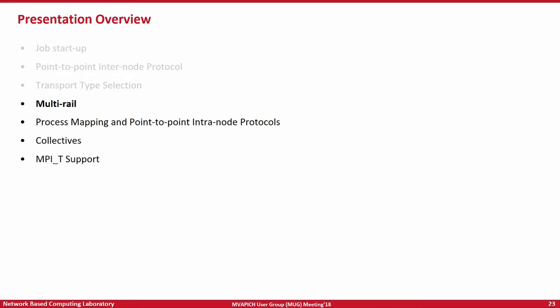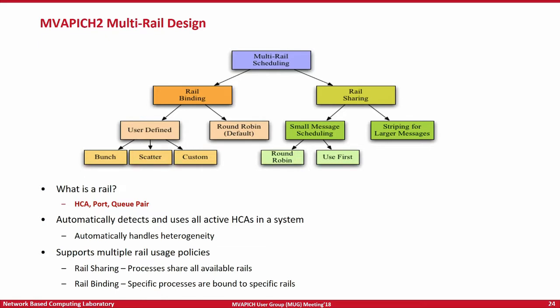Now let's go to multi-rail. What is multi-rail? Typically, most HPC systems have one network adapter per host. What if you have multiple network adapters per host — can your MPI library take advantage of both to give good communication performance? That is what we are trying to address in multi-rail. There are different kinds of multi-rail scheduling policies, meaning different ways to bind processes to InfiniBand HCAs or OmniPath HFIs. You can say you want rail binding — one process will only use one network adapter — or rail sharing — one process will try to load balance its traffic across multiple network adapters. MVAPICH2 automatically detects and uses all active InfiniBand network adapters on a system and supports all of these rail binding policies.